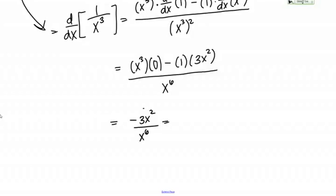So I can reduce this. I have 2 factors of x in the top and 6 factors of x in the denominator. So if I simplify, that leaves me with 4 factors of x in the denominator.